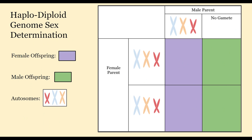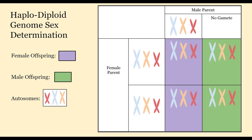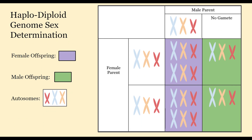Then we have haplodiploid genome sex determination, which unlike the last three doesn't have any sex chromosome involved. In this case the sex of an individual is determined by its ploidy — if it's diploid then it's female, and if it's haploid then it's male. So in this case the sex is determined by the male parent and whether or not the female gamete is fertilized by a male gamete.